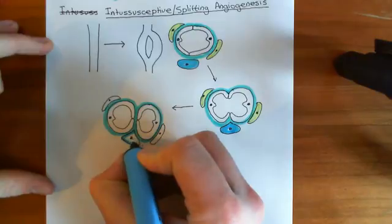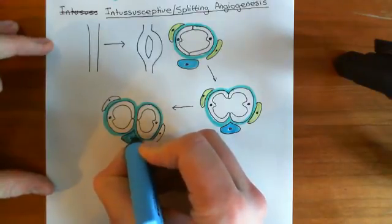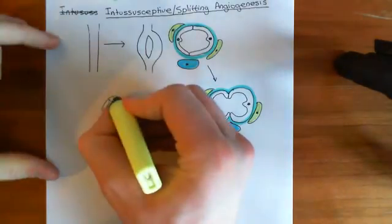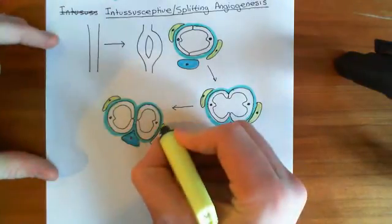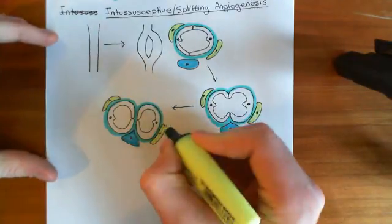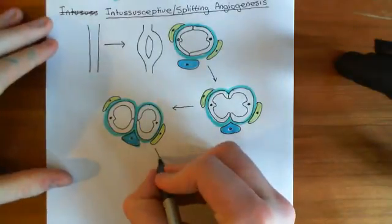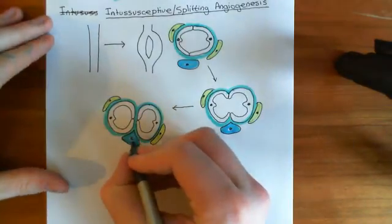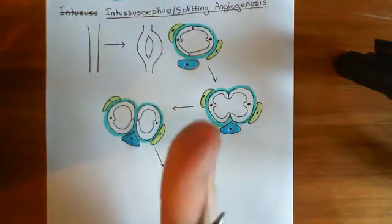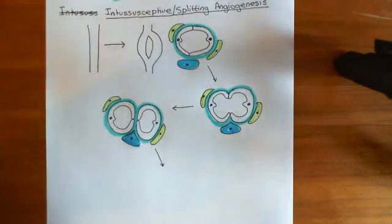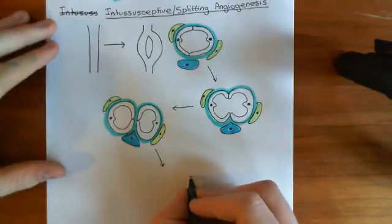They are now separate blood vessels, but they're still attached together, so we want them to become unattached — and it's the fibroblast that's going to be responsible for that. Step four is that the fibroblast is going to push its way between the two capillaries, separate them out, and once it's in between it will start synthesizing a huge amount of collagen to separate them out even more.